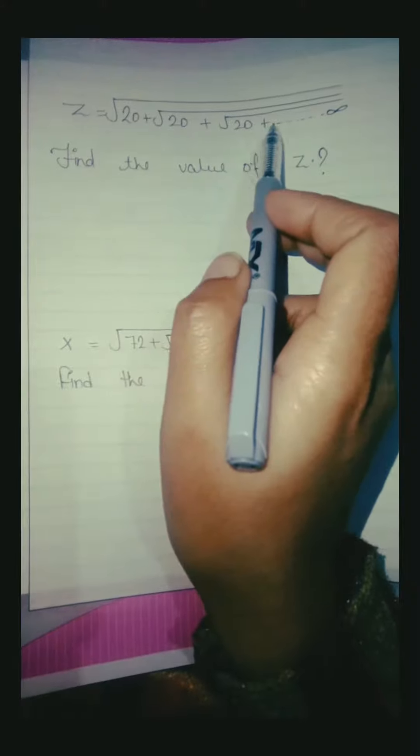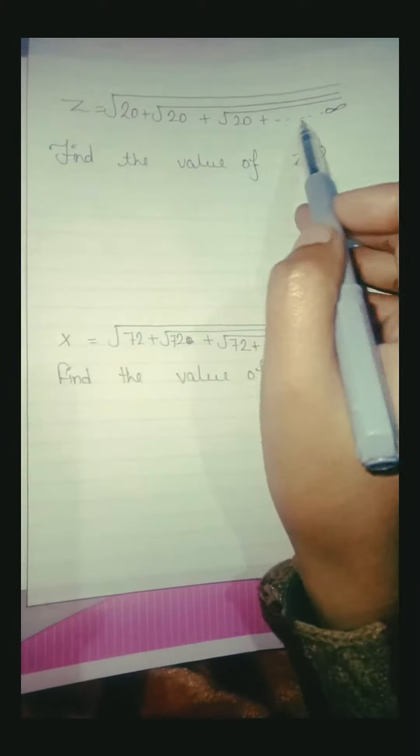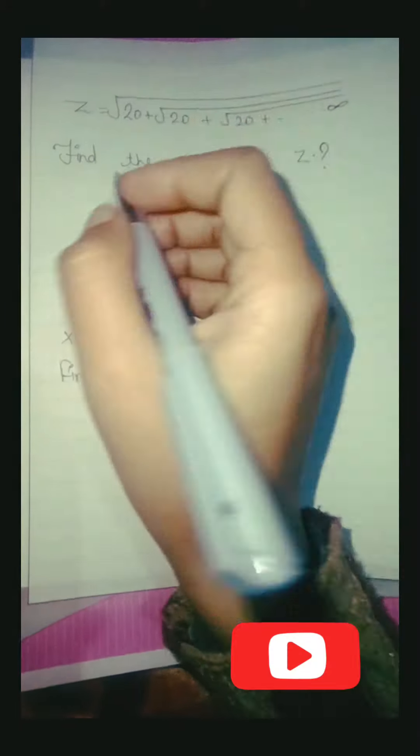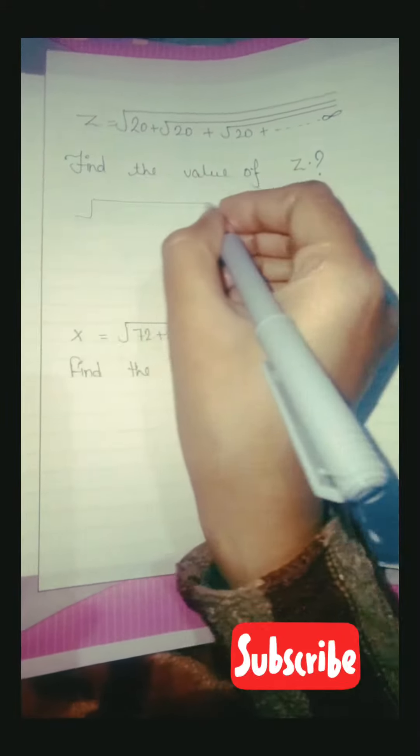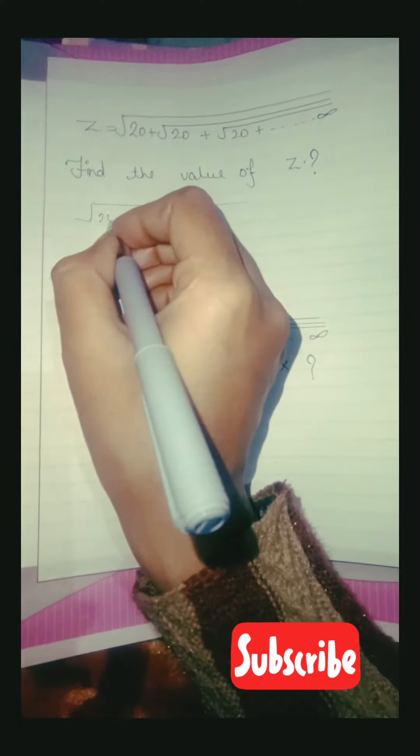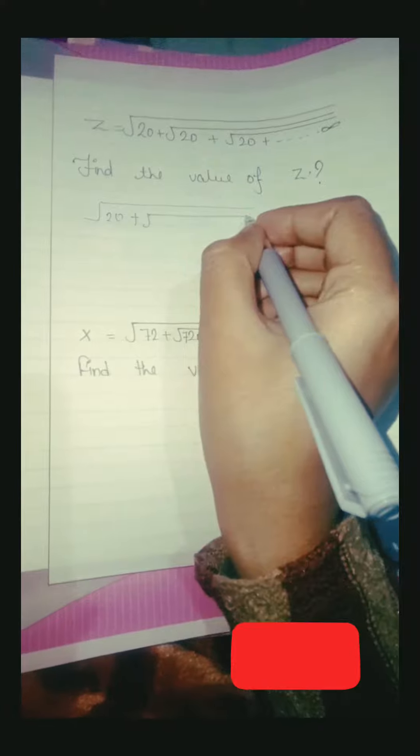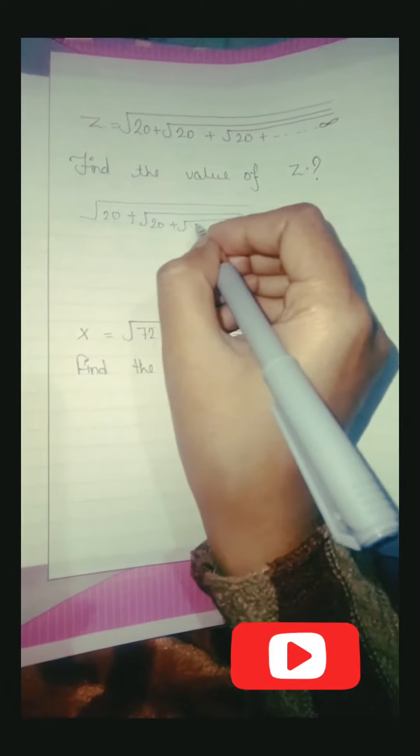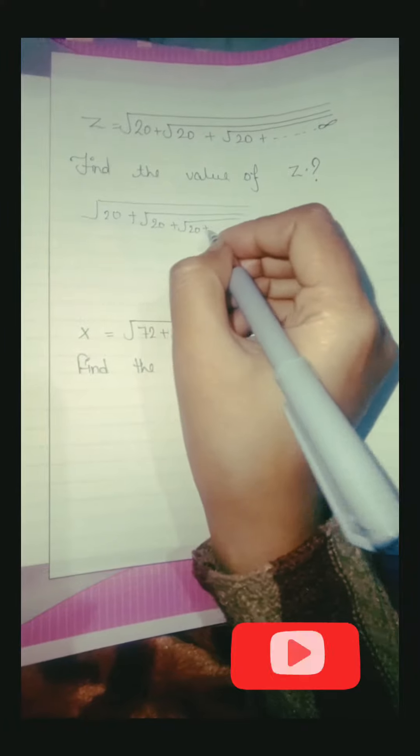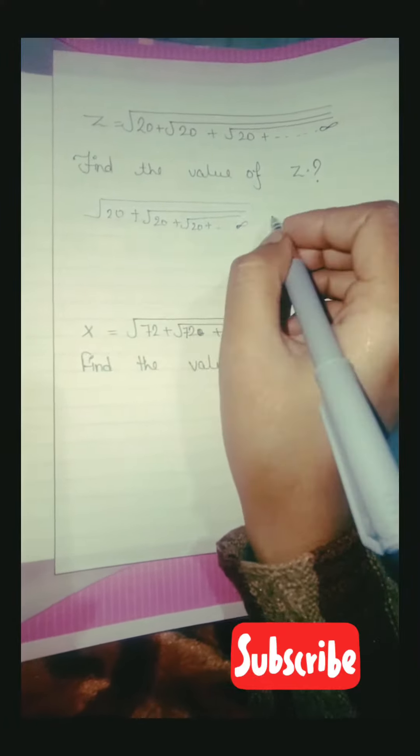We need to set up this equation. We have root 20 plus root 20 plus root 20 dot dot dot indefinite. Indefinite will be written in the same way.